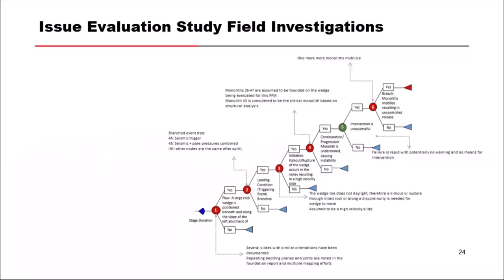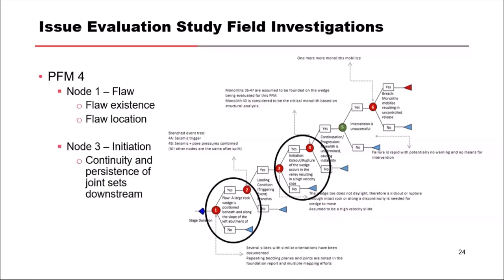So I'm going to ask a question - what nodes on the event tree might mapping influence? Node 1 - the flaw. Yes, we thought that mapping would inform node 1, the flaw: does the flaw exist and where is its location? And node 3, initiation - what's the continuity and persistence of those joint sets, the A-joint and Z-joint, which was how it was classified prior to our field mapping exercise. We really wanted to reduce the uncertainty on that and have a better understanding - not just a conceptual or hypothetical wedge that we kind of knew where it existed, but wanted to get out and map that.